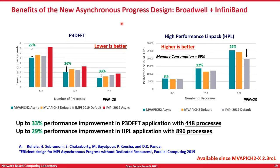One of the most critical requirements of any communication runtime is the ability to make progress on communication. When control is in the communication runtime, progress is straightforward. But what happens when control is outside the runtime — maybe inside the application performing compute? Who will progress the communication then? Unfortunately, the answer is no one. This is where we proposed a new, more optimized asynchronous progress design that is more generic and applicable to different high-performance communication interconnects. With such a design, we are able to see up to 33% and 29% improvement in performance of P3DFFT and the HPL application at a fairly large number of processes.